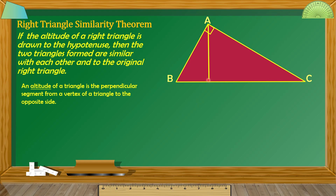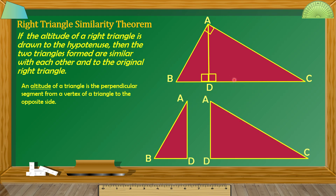Pangalanan natin itong Point of Intersection ng Altitude at ng Hypotenuse as Point D. And then, kapag nag-draw tayong Altitude dyan, makakabuo tayo ng mga triangles. Itong maliit na triangle — itong ABD — at itong ADC. Meron tayong maliit na triangle na nabuo, which is triangle ABD, at meron din tayong isang triangle na mas malaki, which is triangle ADC. At yung pangatlong triangle, yung original right triangle, is itong triangle ABC.